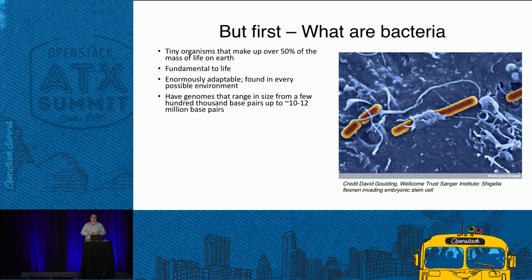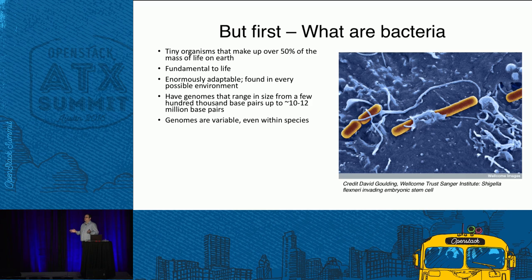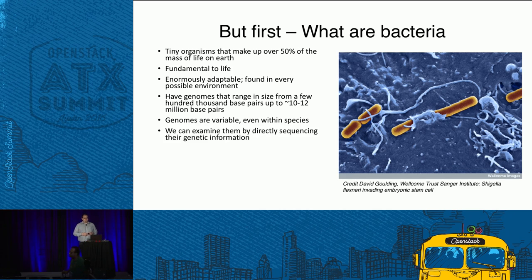Bacterial genomes range in size from a few hundred thousand base pairs up to around 10 to 12 million base pairs, so there's a lot of variability within bacteria. Even within a species you have a variable genome. If you took the genomes of everybody in this room, we'd all have the same set of genes — maybe different versions, but the same set. If you took the E. coli out of the gut of every person in this room, they wouldn't have the same set of genes — there'd be a few thousand shared, but several thousand more present in only some individuals.